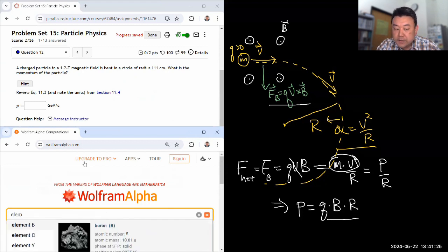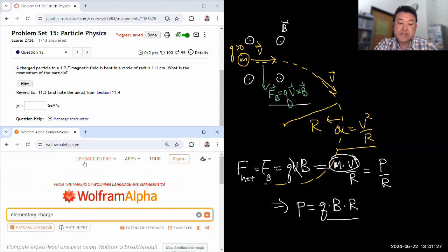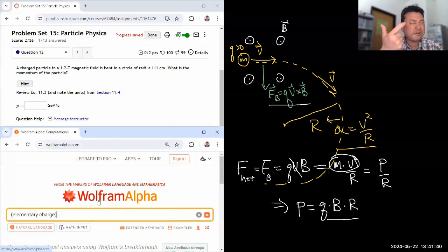So amount of charge—oh I don't know the amount of charge. I mean I can assume that it's elementary charge. Now it might not be. It's possible that it's a heavy ion that's multiply ionized, but you know the question didn't tell us that.